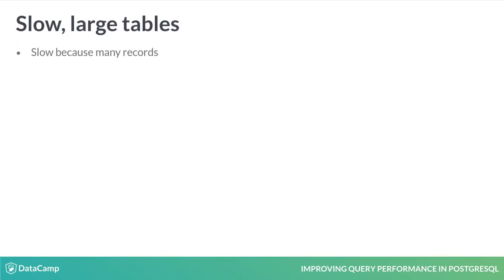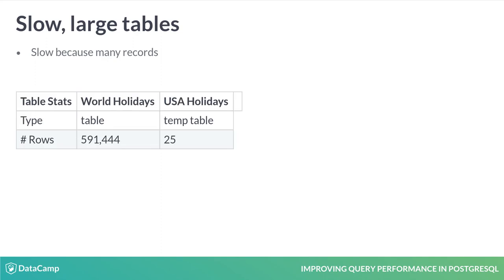Commonly, slow-to-query tables are the result of a large table, meaning one with many records. As shown here, the world holidays table has about half a million rows, while the temp table of just the USA holidays has only 25.